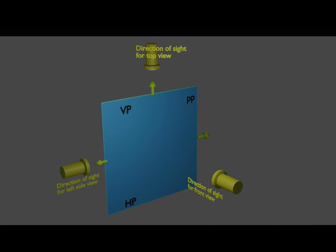Now you can see that all three planes overlap each other — the vertical plane, horizontal plane, and profile plane. These three planes overlap each other when they undergo the rotation. Now all the views that we get on these reference planes can be drawn on a two-dimensional sheet.